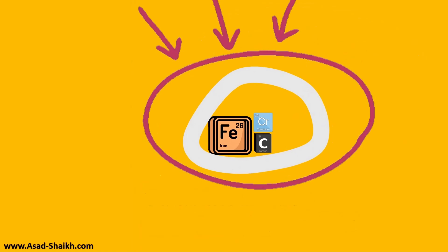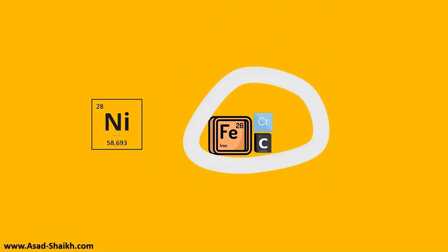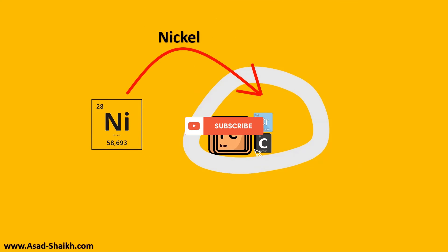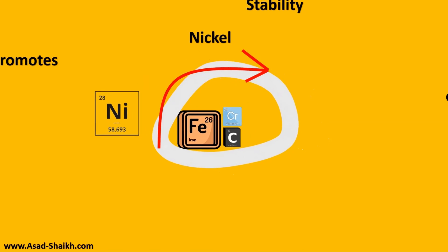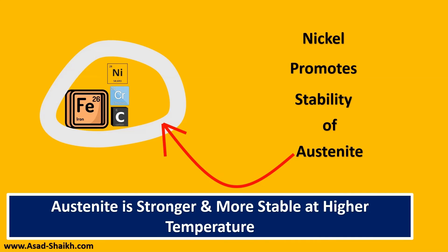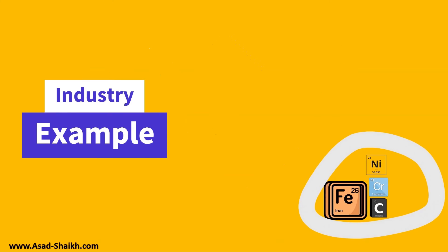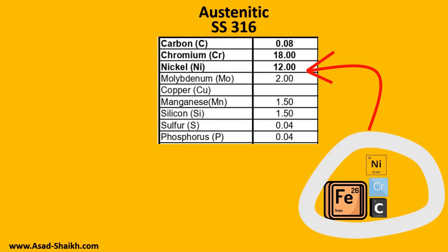The next step is adding another amazing element — nickel. As soon as you add nickel, something amazing happens: nickel promotes the stability of austenite. Austenite is strong and more stable at higher temperatures, and because of this we get austenitic stainless steel. A great example, which is always an excellent material choice, is SS316.